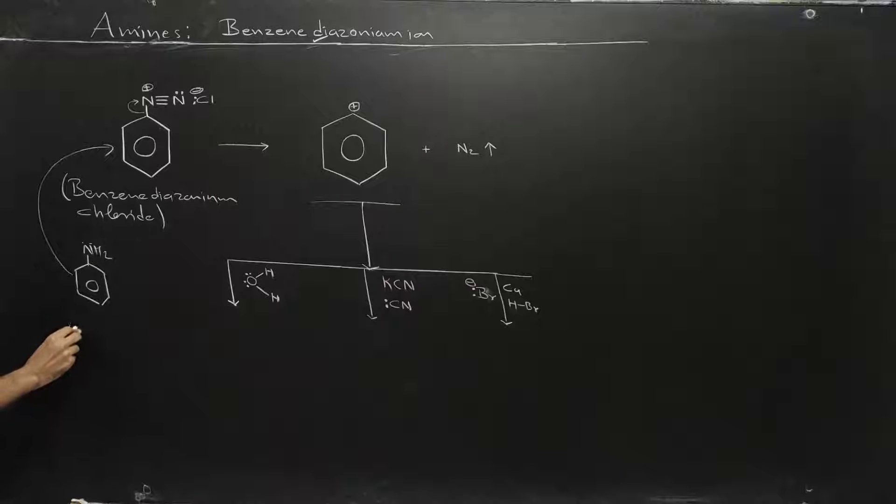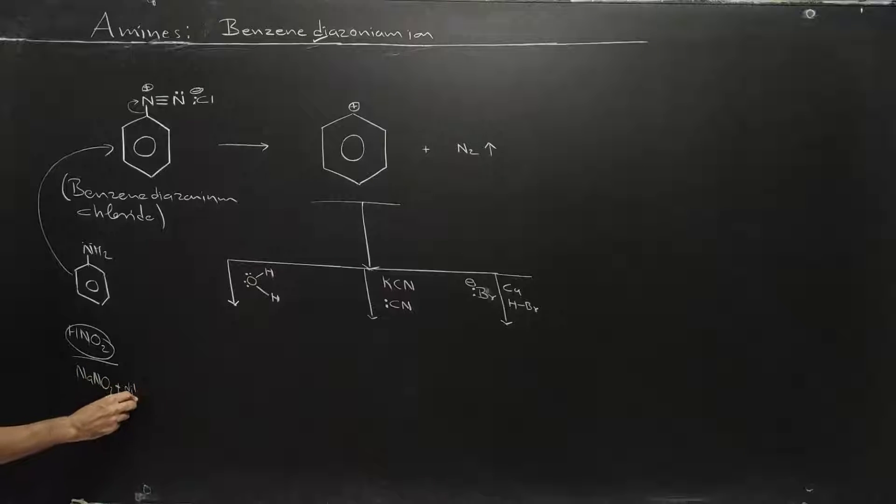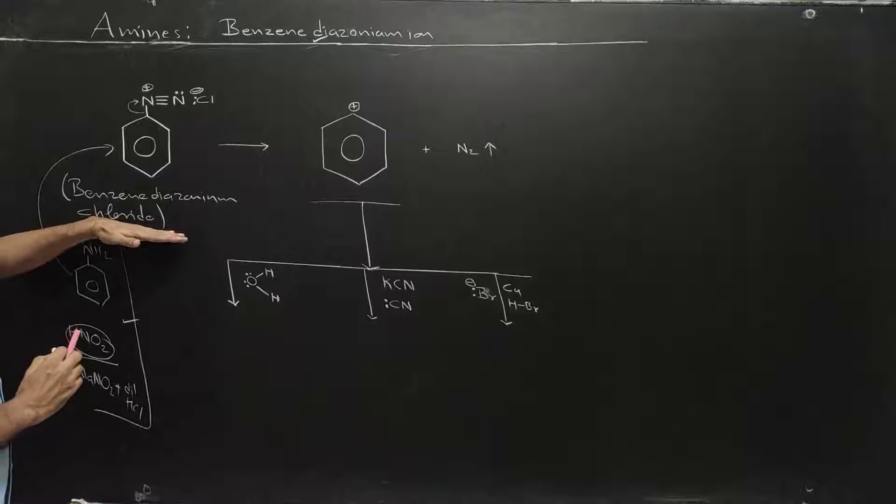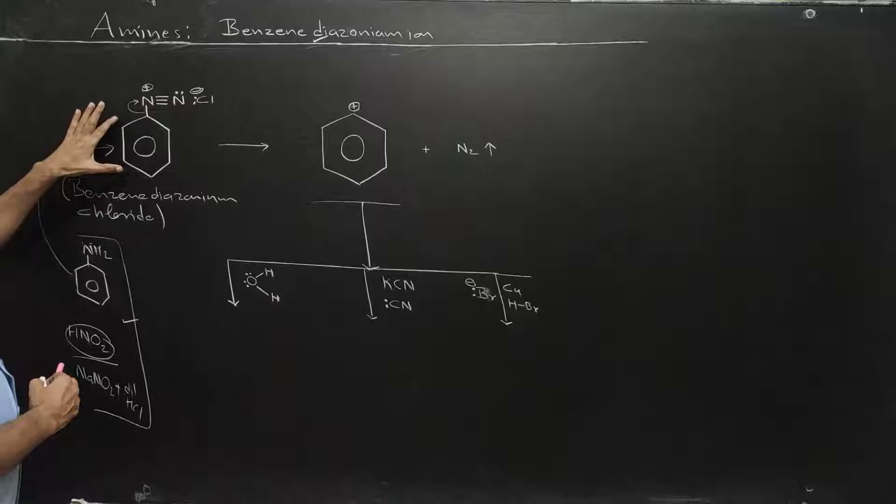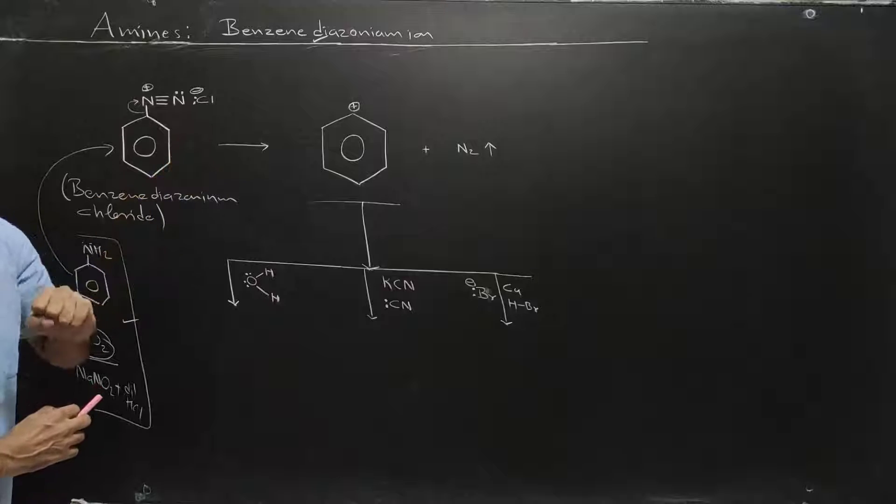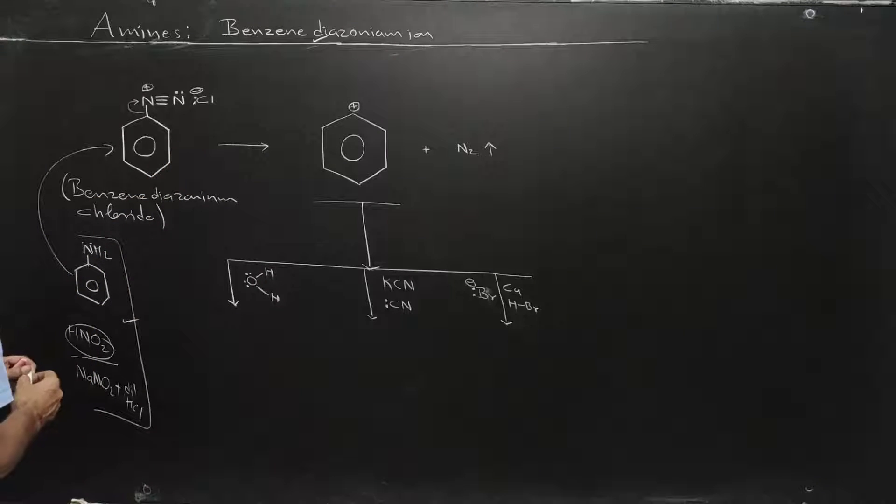Let me write it here. So aniline, how it can be converted into this, we have studied by action of nitrous acid in cold condition. Nitrous acid we get from NaNO2 plus dilute HCl. Now this we have covered.